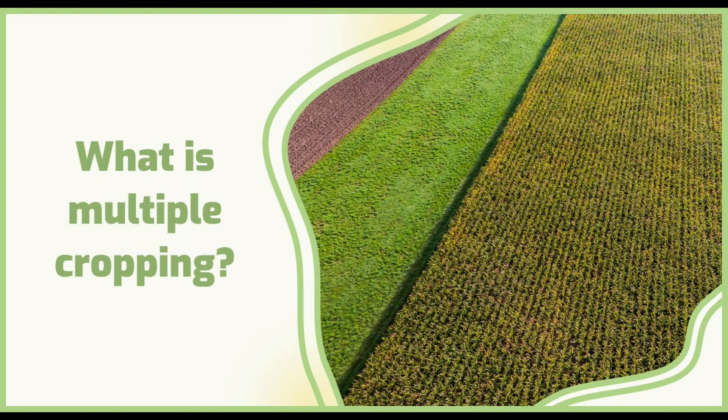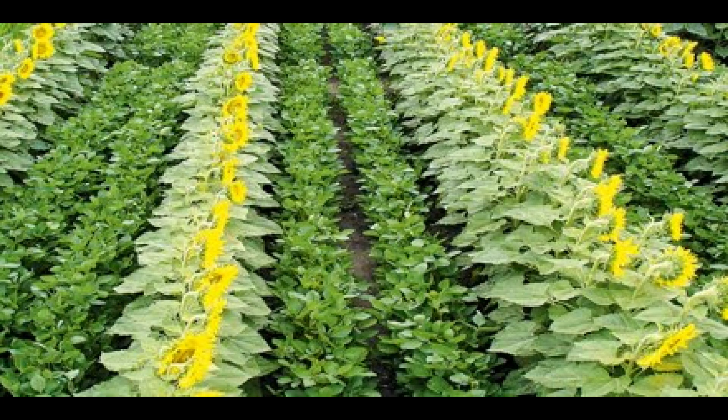Multiple cropping is a practice of producing two or more crops on the same plot of land at the same time, rather than simply one throughout the same growing season. Multiple cropping aids in enhancing the land's yield, and because more crops are grown, the benefits and income increase as well.